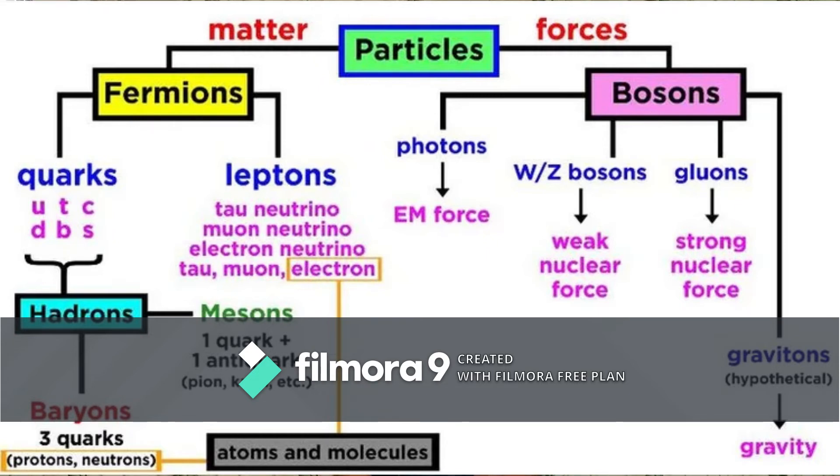Gauge bosons are the force carriers. They can be split into four parts. That is, a photon that mediates the electromagnetic force, the W and Z bosons that mediate the weak nuclear force, and the gluons that mediate the strong nuclear force.